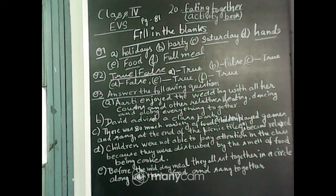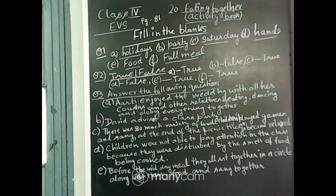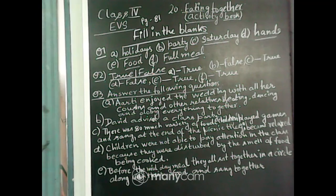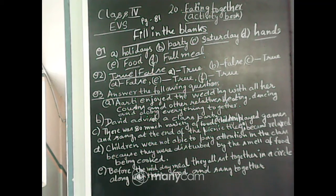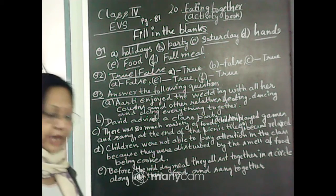To summarize the answers — A: Aarti enjoyed the wedding with all her cousins and other relatives, eating, dancing and doing everything together. B: David advised a class party. C: There was so much variety of food, children played games and sang; at the end of the picnic they all became relaxed. D: Children were not able to pay attention in class because they were disturbed by the smell of the food being cooked. E: Before the midday meal, they all sat together in a circle along with their food and sang together.